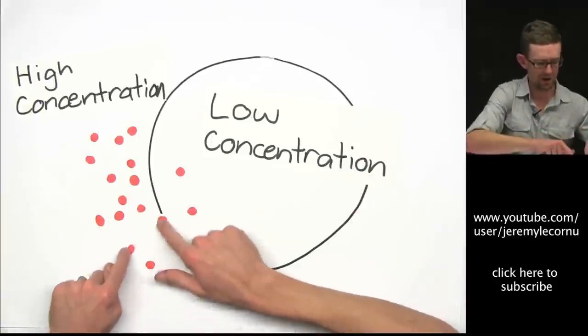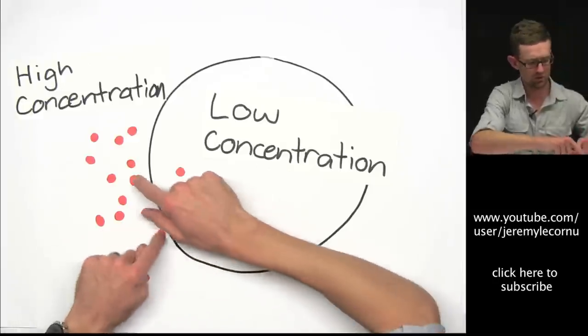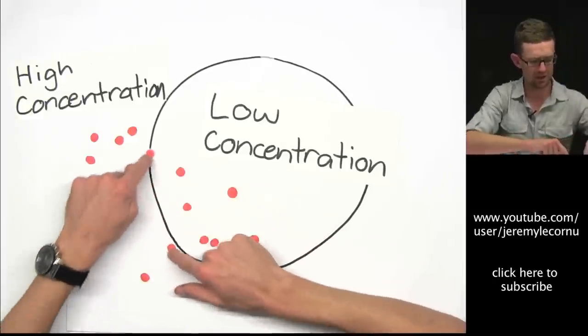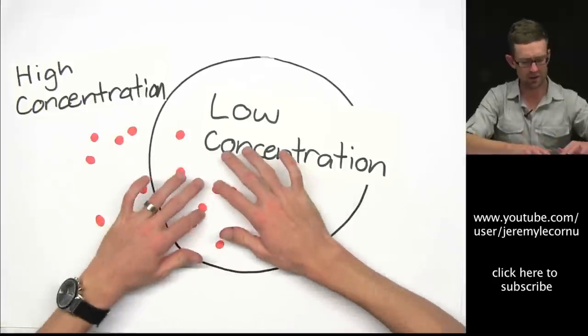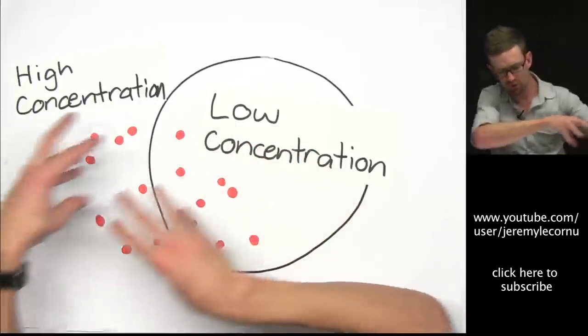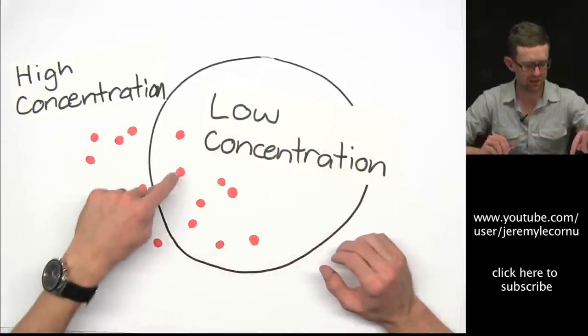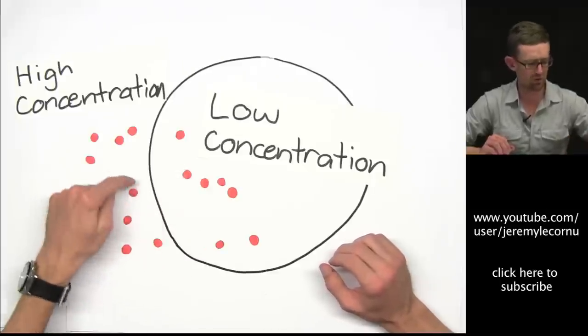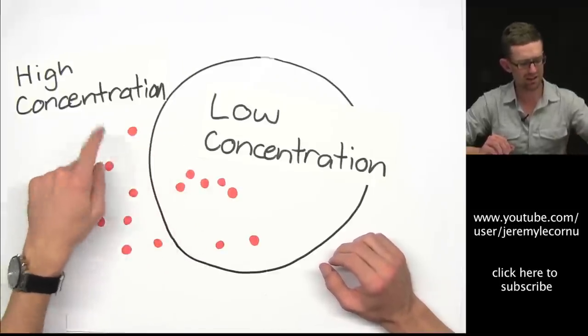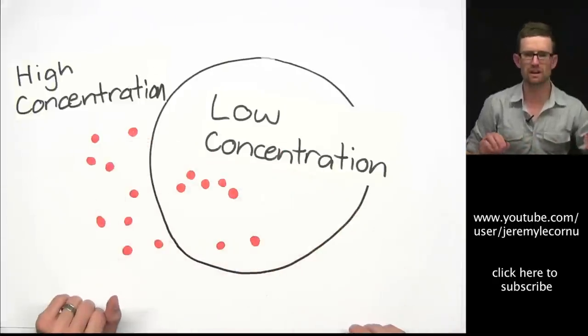Remember, particles in constant motion. That movement will take place, and because it was a higher concentration outside of the cell, we end up with particles moving into the cell. It doesn't mean particles aren't moving out because they are, but the net movement is particles moving into the cell until we reach an equilibrium.